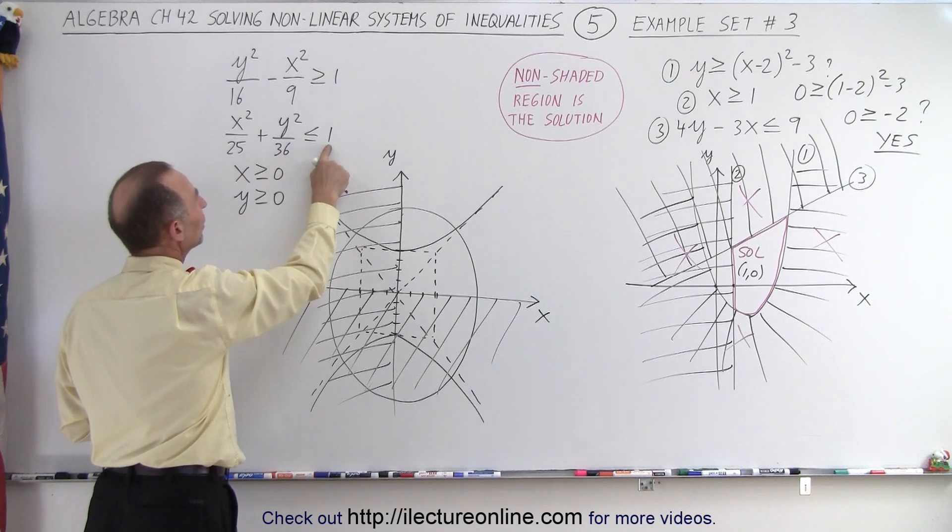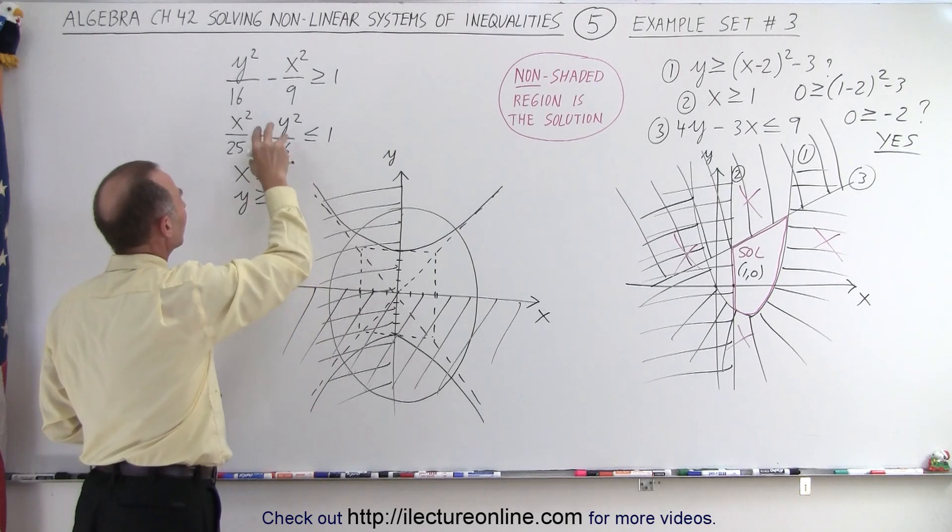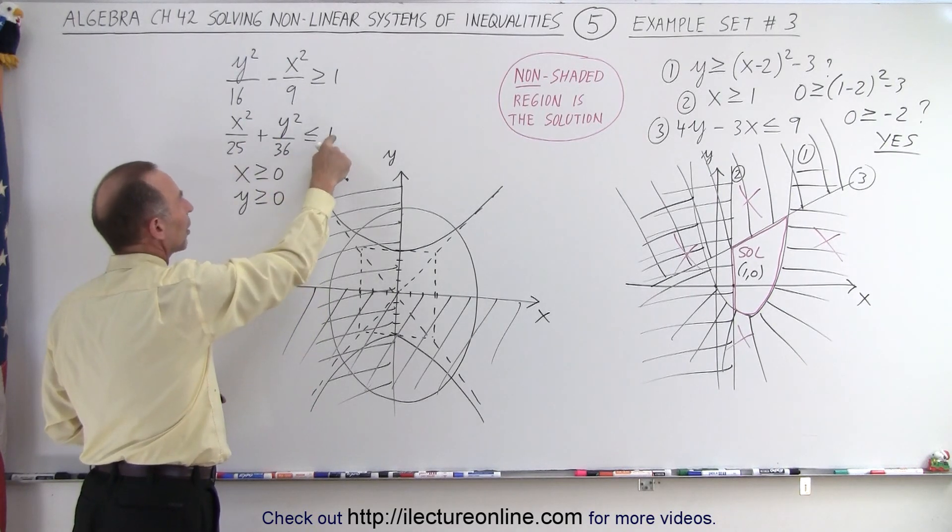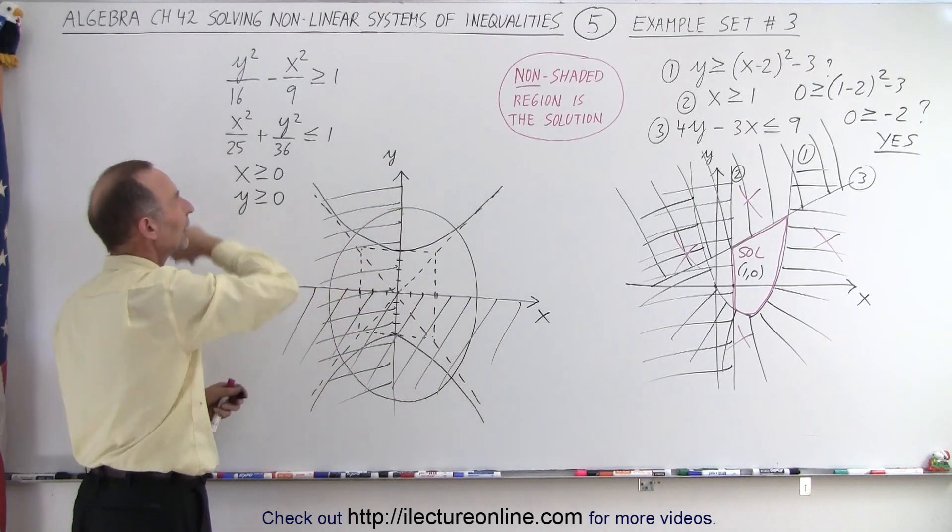Now let's go to the ellipse. Less than or equal to one. Well, remember from the first video, we realized that if it's an ellipse and it's less than a number, that means that everything inside the ellipse is valid. Everything outside the ellipse is not valid.